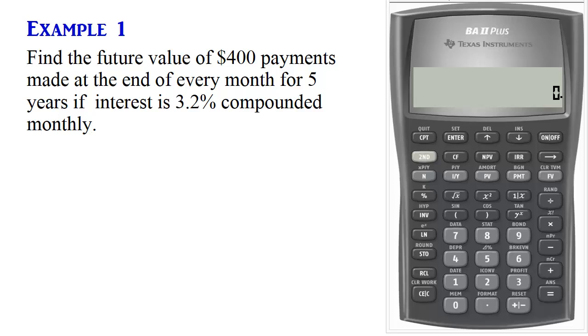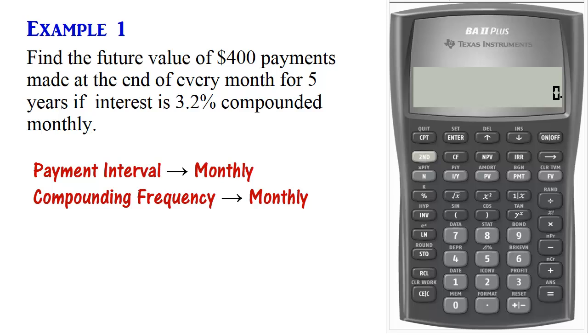In this example, payments are made at the end of every month and interest is also compounded monthly. Payment interval and compounding frequency coincide. So we refer to that as Simple Annuity.